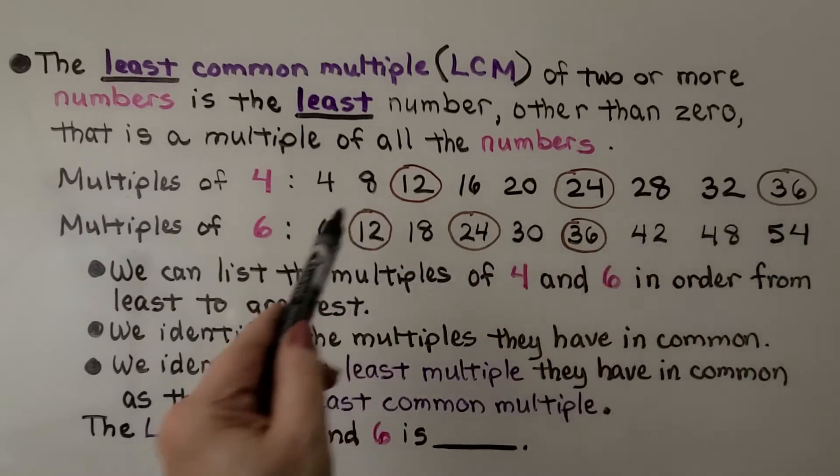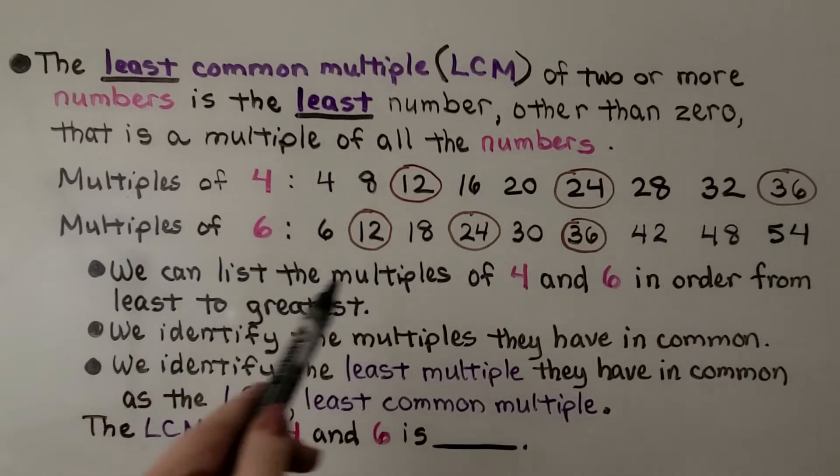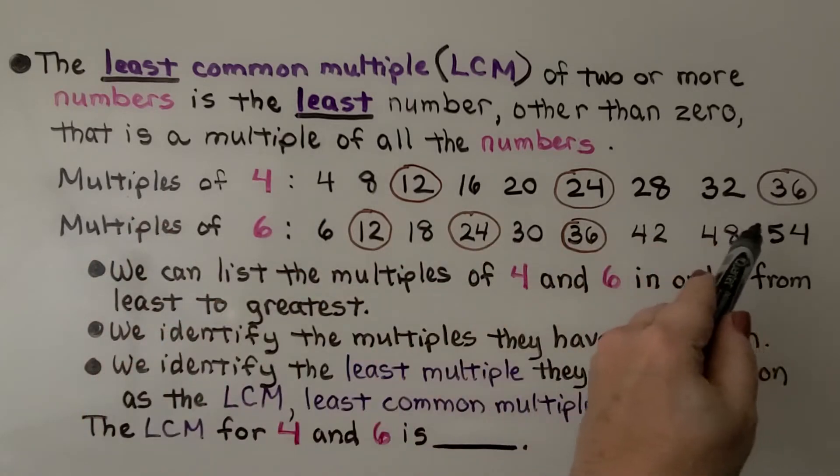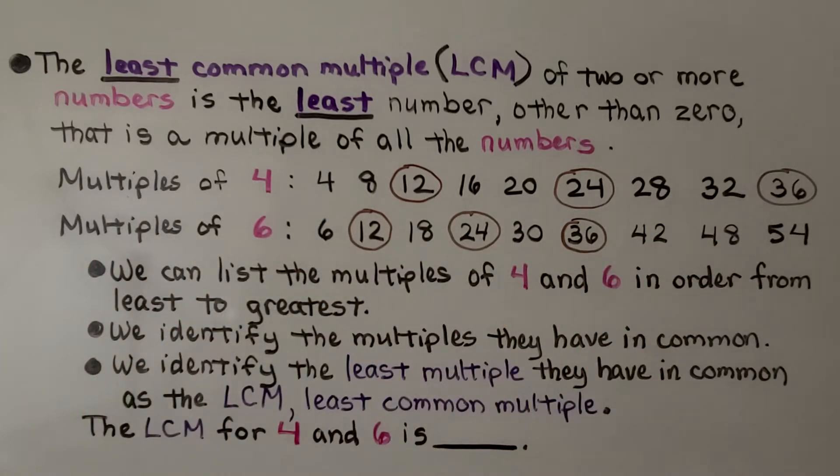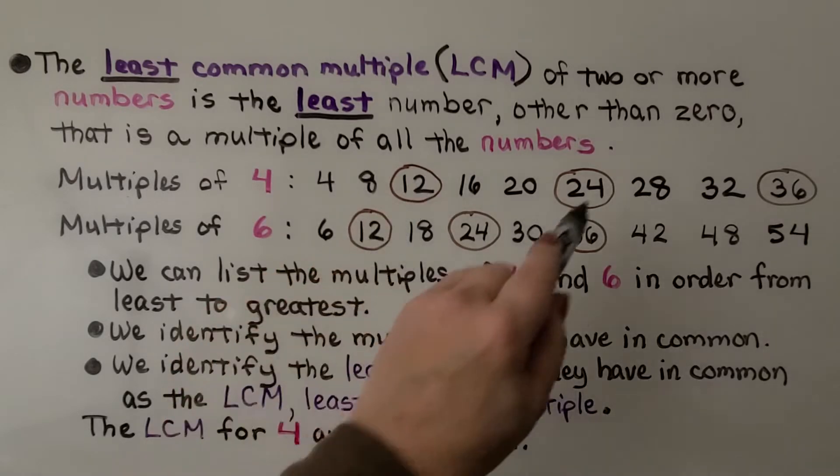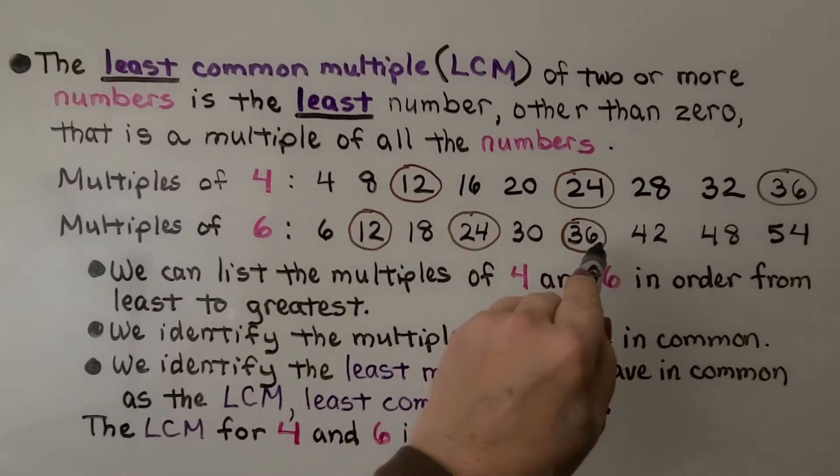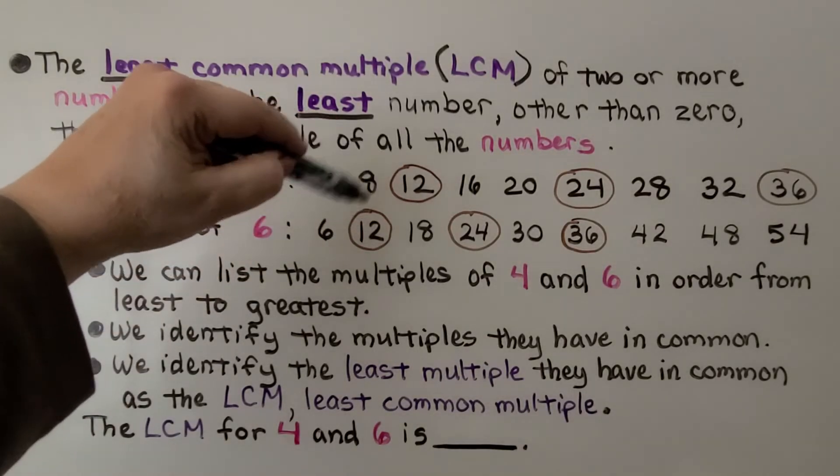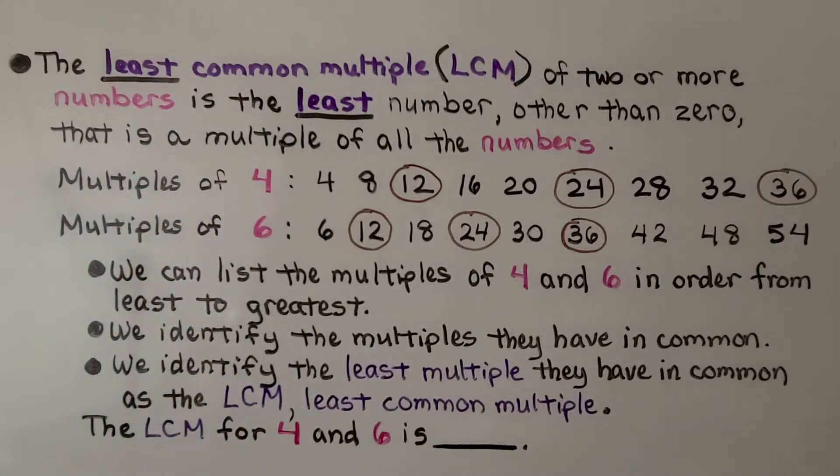And we can list the multiples of 4 and 6 in order from least to greatest. We identify the multiples they have in common. They have 12 in common, 24 in common, 36 in common. We identify the least multiple they have in common as the LCM, the least common multiple.